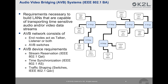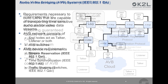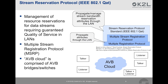We will start with IEEE 802.1QAT which describes the stream reservation protocol. The stream reservation protocol is about the management of resource reservations for data streams requiring guaranteed quality of service in local area networks. The main portion of this work is done within the so-called multiple stream registration protocol, or MSRP. This in turn is based on the multiple registration protocol, a protocol that is used to propagate certain attributes through a LAN. The protocol allows stream endpoints to register their willingness to talk or listen to specific streams, and it propagates that information through the network.